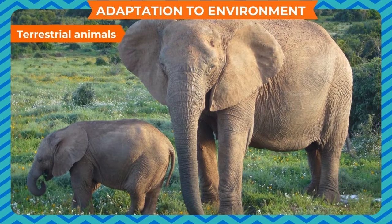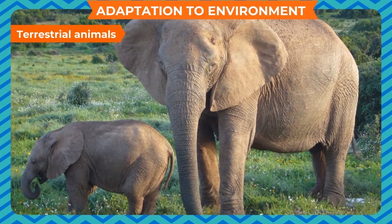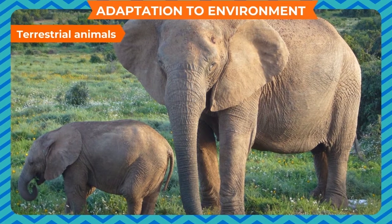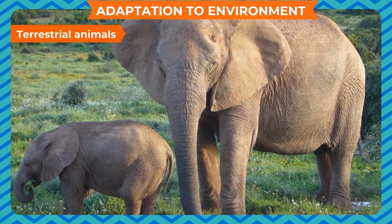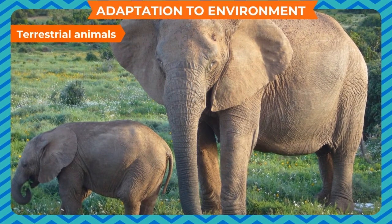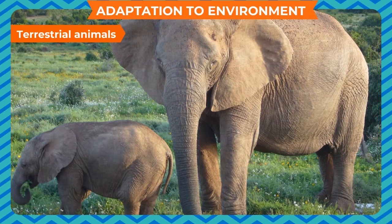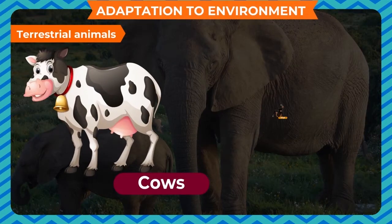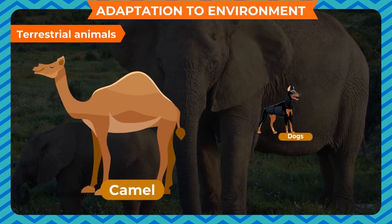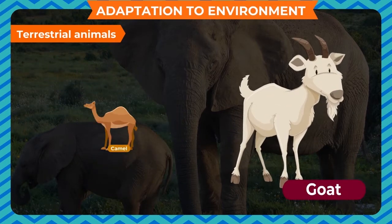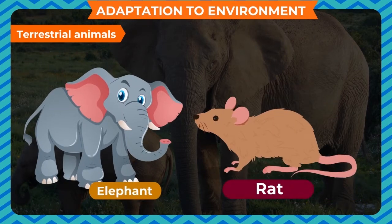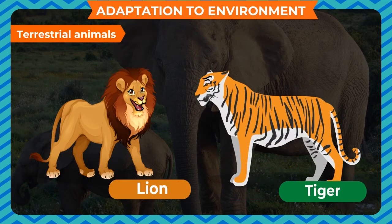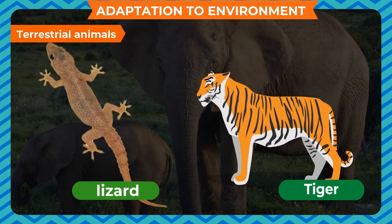Terrestrial Animals. Animals that live on land are called terrestrial animals. Their body organs help them to live on land. Cows, dogs, camels, goats, elephants, rats, lions, tigers, lizards, etc. are terrestrial animals.